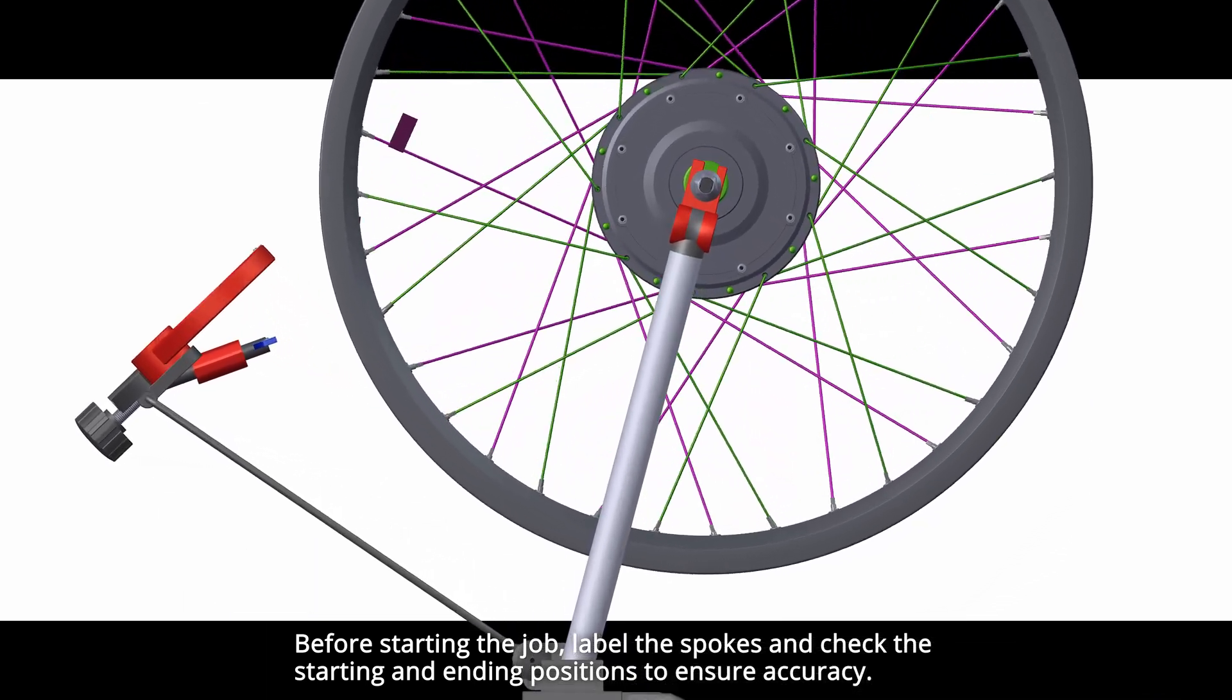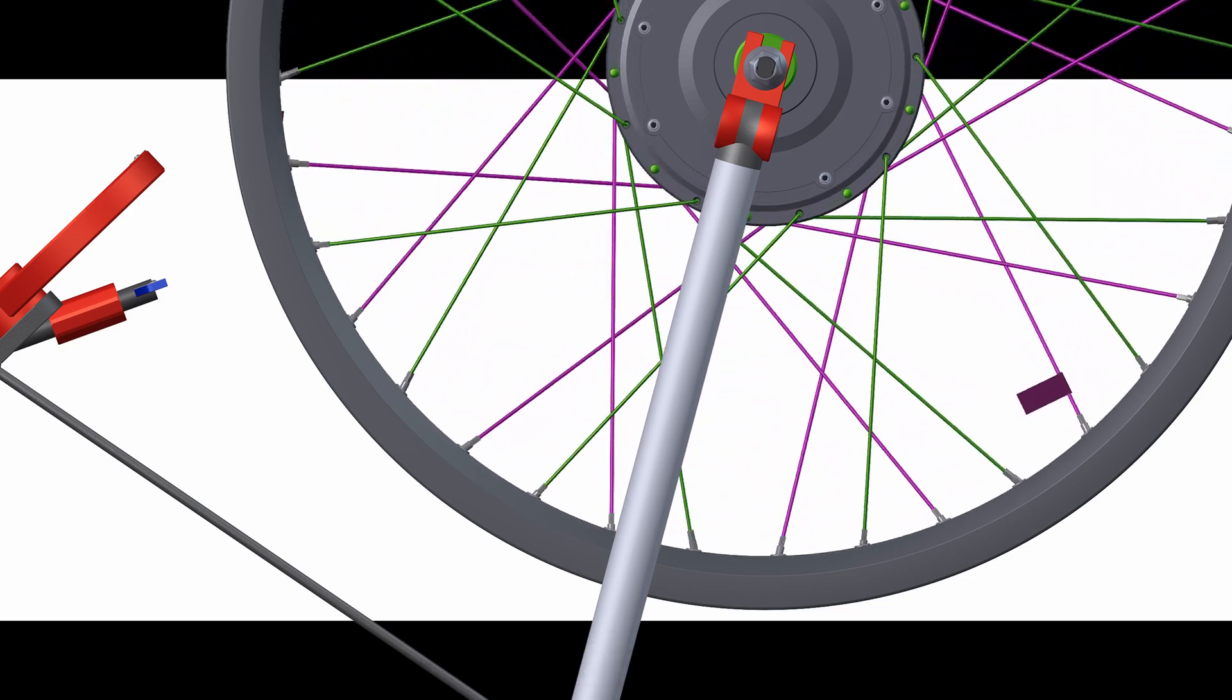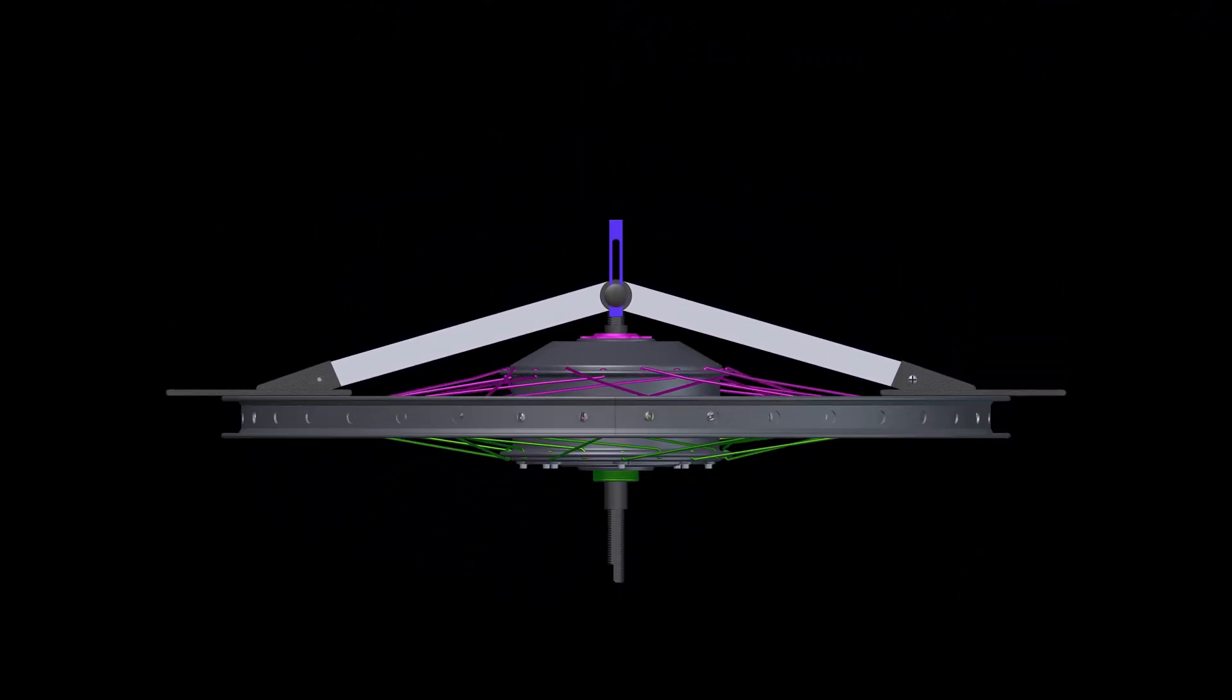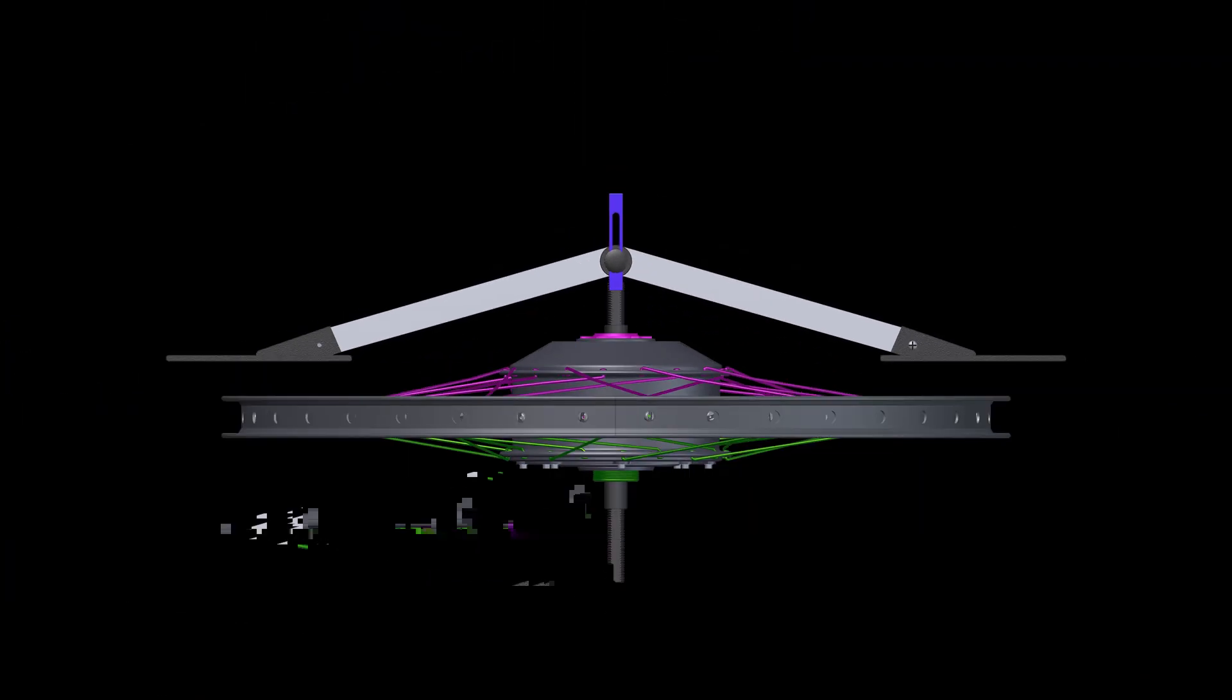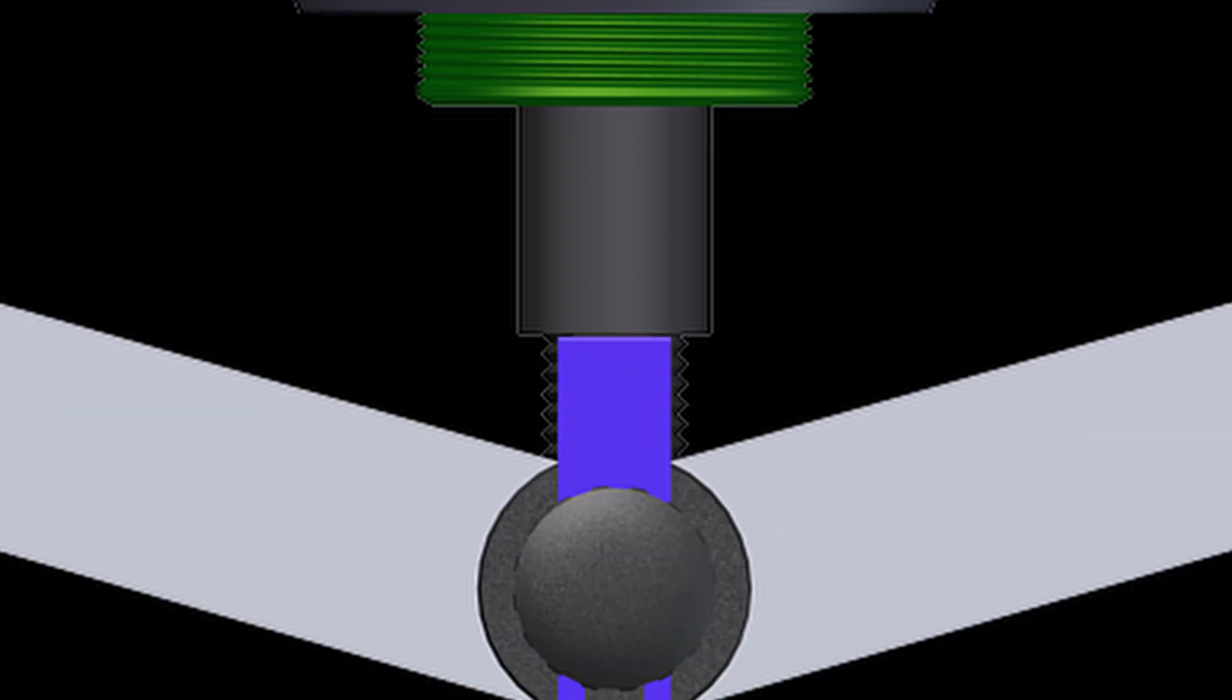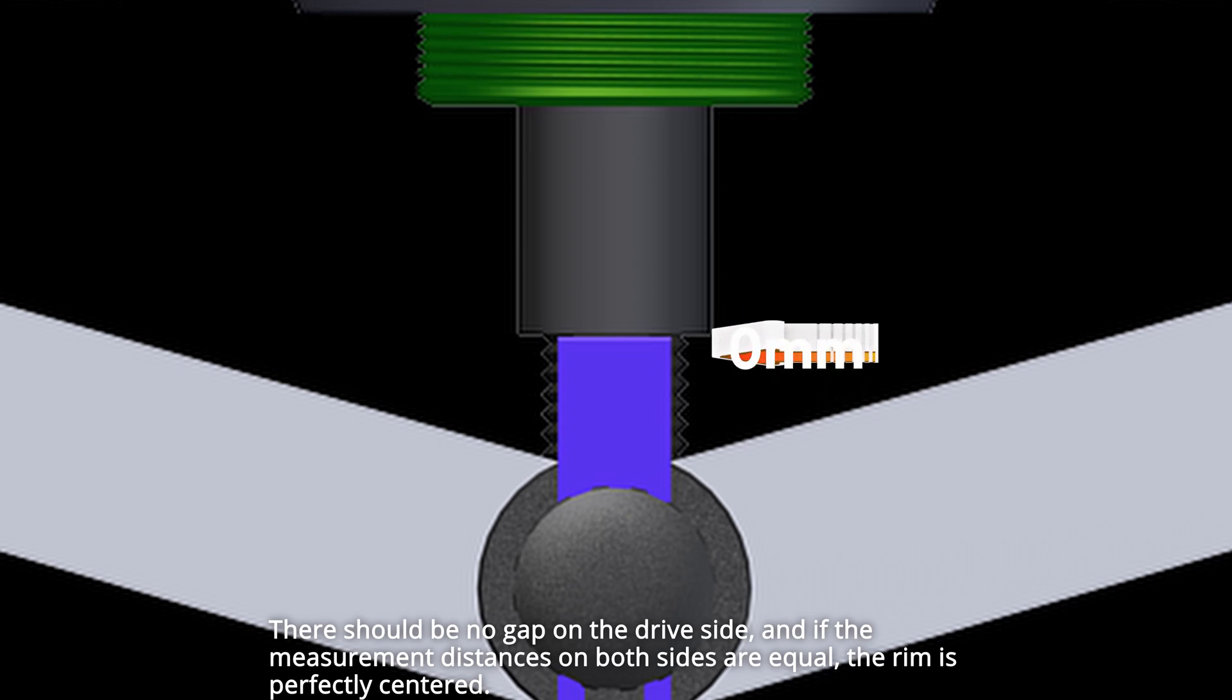Before starting the job, label the spokes and check the starting and ending positions to ensure accuracy. Start the inspection again from the beginning. There should be no gap on the drive side, and if the measurement distances on both sides are equal, the rim is perfectly centered.